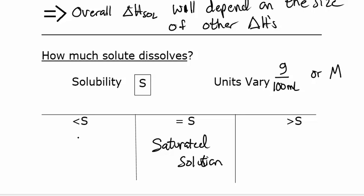Whenever you have less than that, so if I have less than 39 grams of sodium chloride for 100 grams of water, then we would say that's an unsaturated solution.